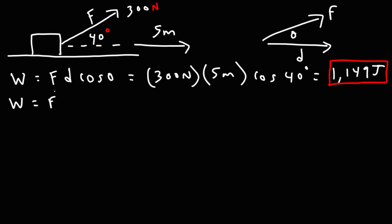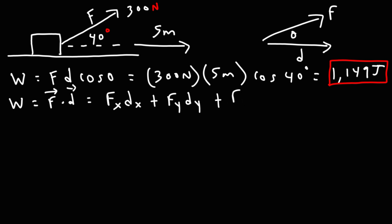Work is the dot product of the force vector and the displacement vector. To calculate the dot product, we multiply the x components of the force and displacement vectors and add that to the product of the y components. We have a two-dimensional vector, so this is all we need. If we had a three-dimensional vector, we could also add fz times dz.